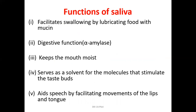The functions of saliva: first, it facilitates swallowing by lubricating food with mucin. Saliva produces mucin which facilitates formation of the bolus and covers it in mucus so it's easy to swallow. The deglutition process is facilitated by mucus. There is also a digestive function — salivary amylase performs chemical digestion of starch in the oral cavity, working alongside mechanical digestion by the teeth.